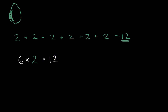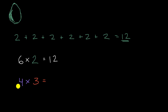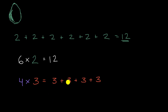We could go the other way around. If someone were to ask you: what is four times three? Pause this video and see if you can write it out as repeated addition, like we saw up here. Well, one way to interpret this is to say this is four threes. So we could say this is equal to three plus three plus three plus three. Three plus three is six, six plus three is nine, nine plus three is equal to twelve.